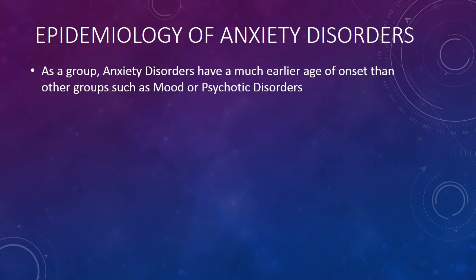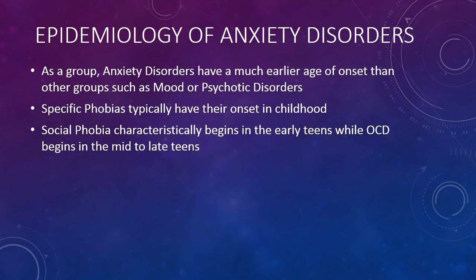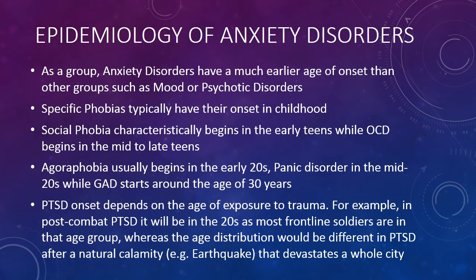As a group, anxiety disorders have a much earlier age of onset than other disorders such as mood or psychotic disorders. Specific phobias typically have their onset in childhood; social phobia begins in the early teens; OCD begins in the mid to late teens; agoraphobia usually begins in the early twenties; panic disorder in the mid twenties; while generalized anxiety disorder starts around age 30. PTSD onset depends on the age of exposure to trauma — for example, in post-combat PTSD it will be in the twenties, as most frontline soldiers are in that age group.